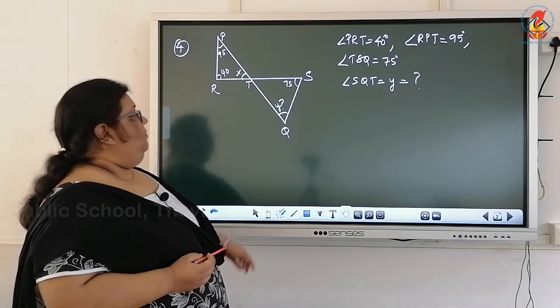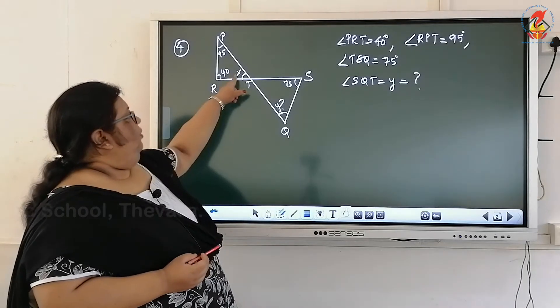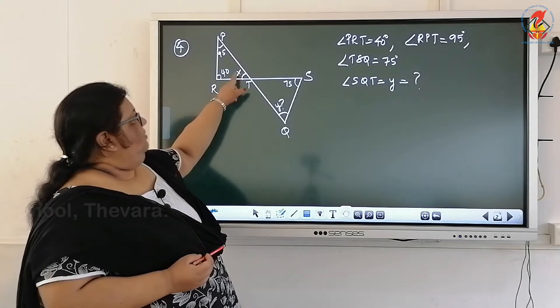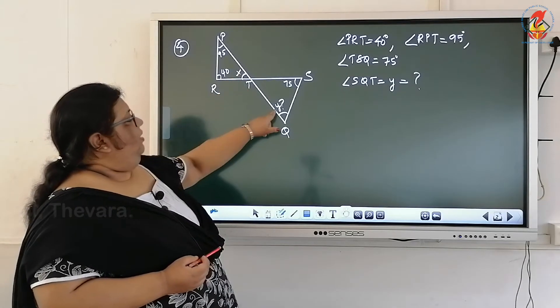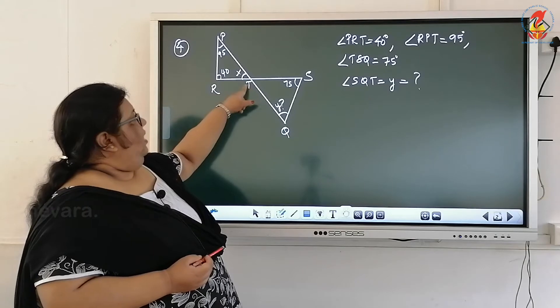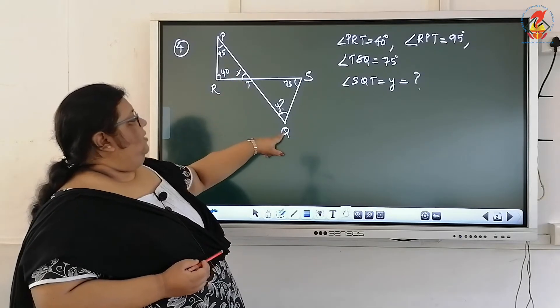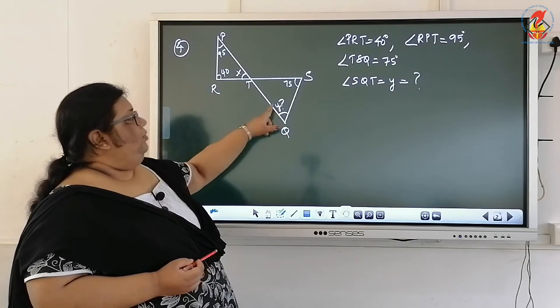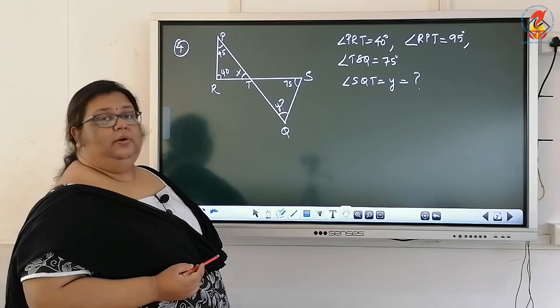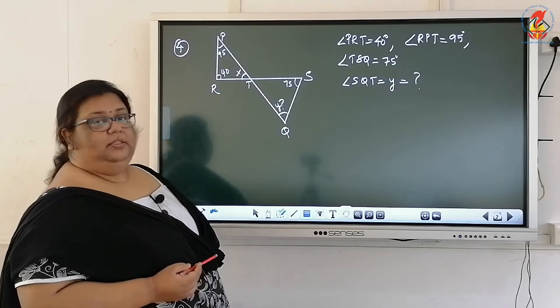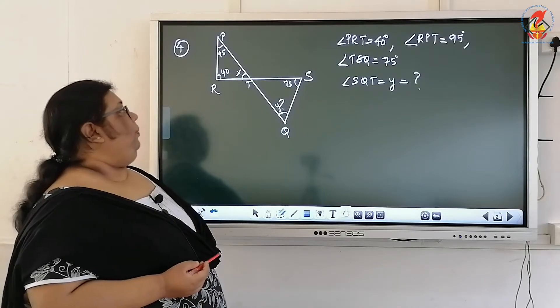For that, I am taking two variables. I am going to write variable X over here and Y here. Angle T is angle X and angle Q is angle Y. Now we will do the problem.